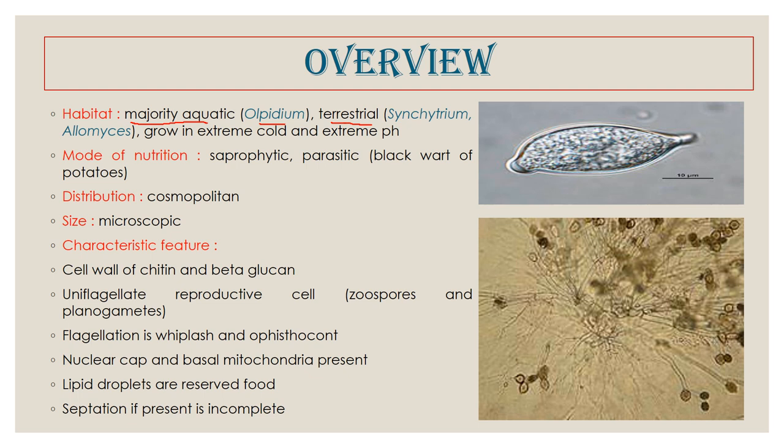Chytridiomycetes, whenever grown in terrestrial environments, are found in wet soil. But one chief characteristic feature of this fungi class is that it can grow even in extreme cold and extreme pH — that is, it can grow in extreme acidic as well as extreme basic soil.